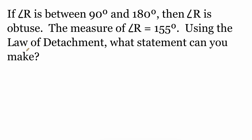In this example we're asked to use our law of detachment. It says if angle R is between 90 degrees and 180 degrees, then angle R would be obtuse. We know that the measure of angle R is 155 degrees. Using the law of detachment, since 155 degrees fits between 90 and 180, the conclusion that we can make is that angle R is obtuse.